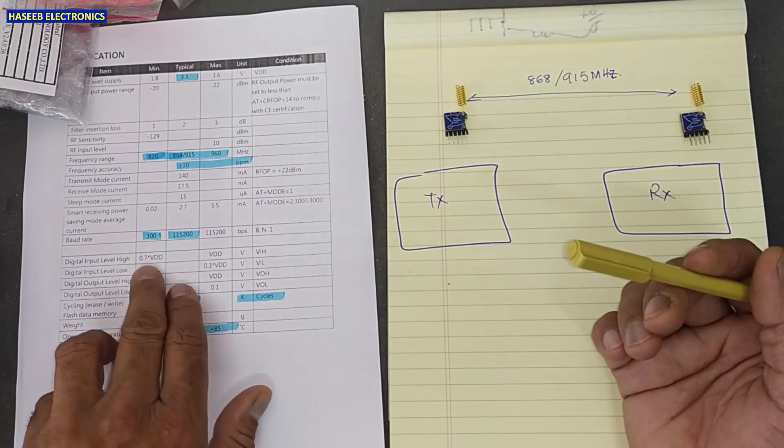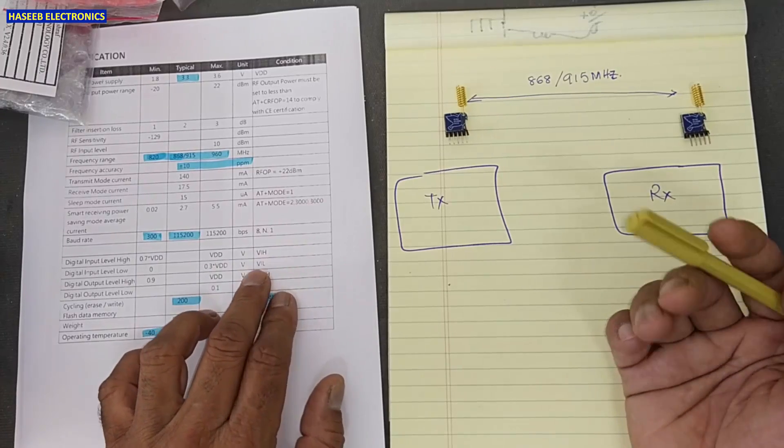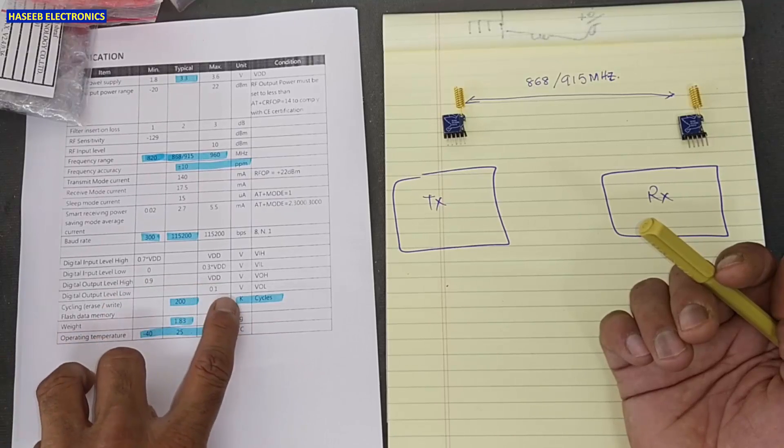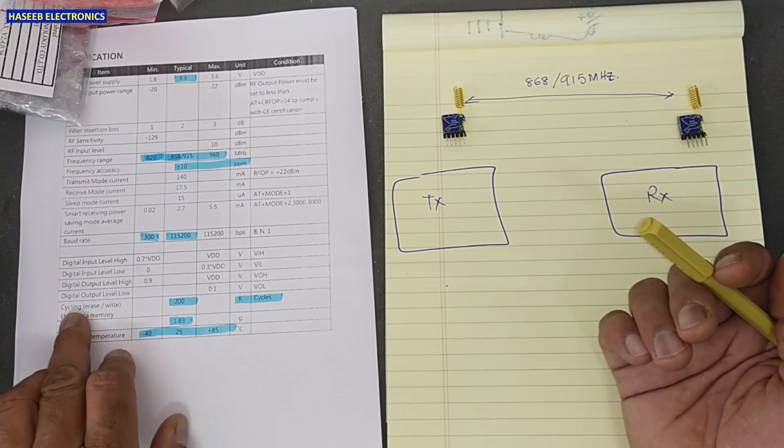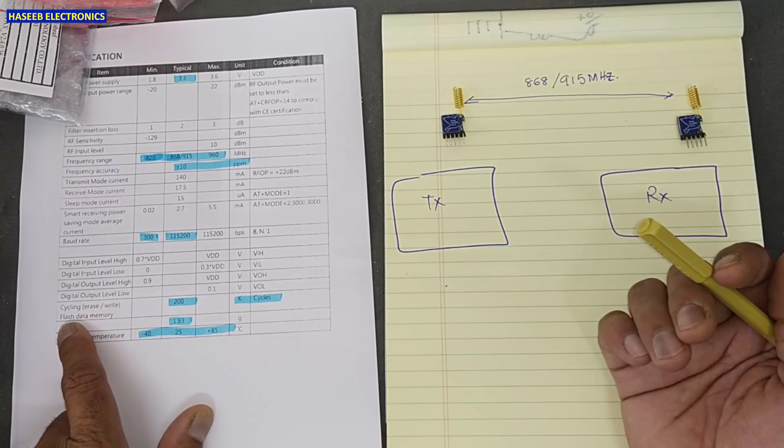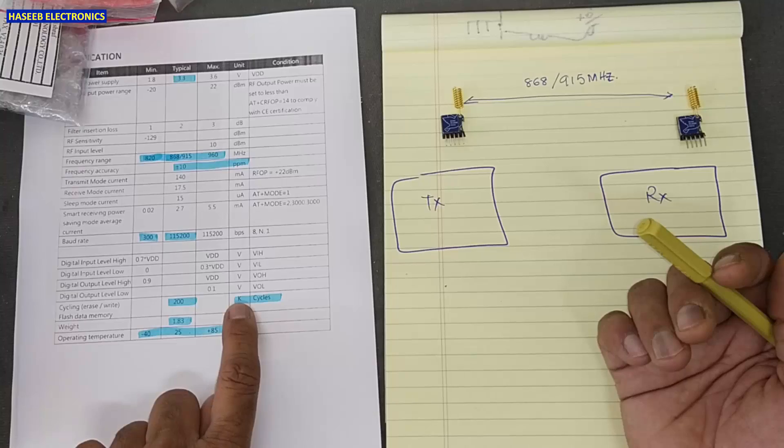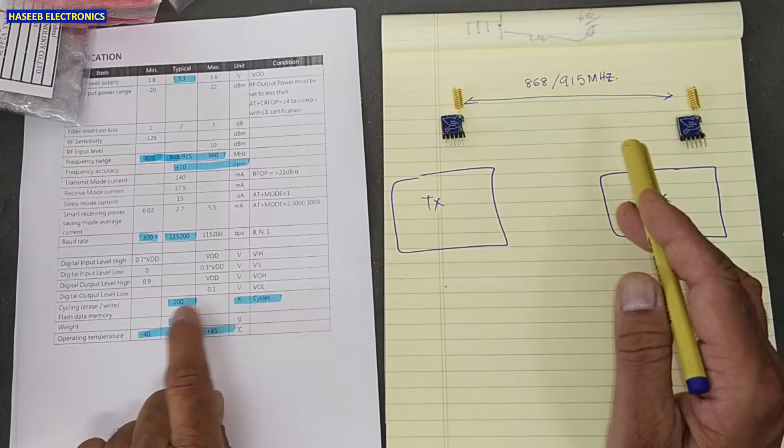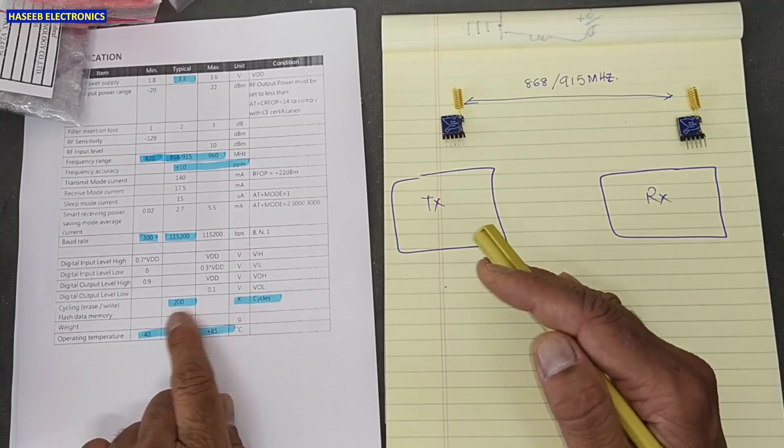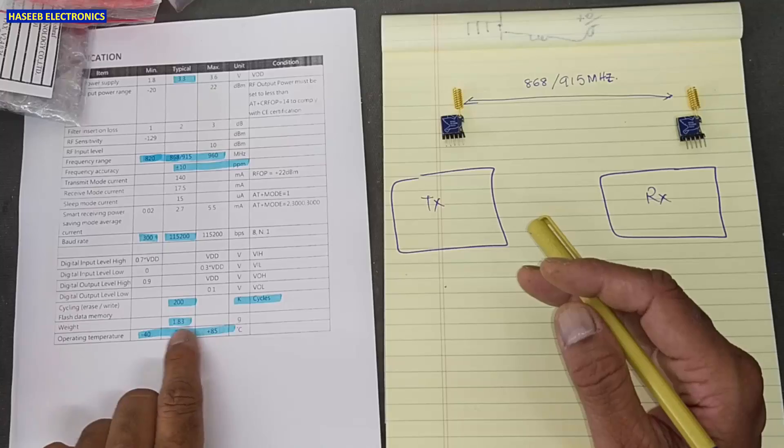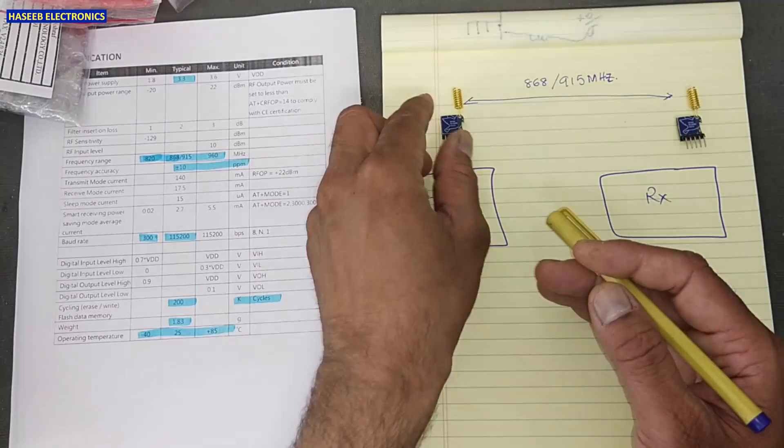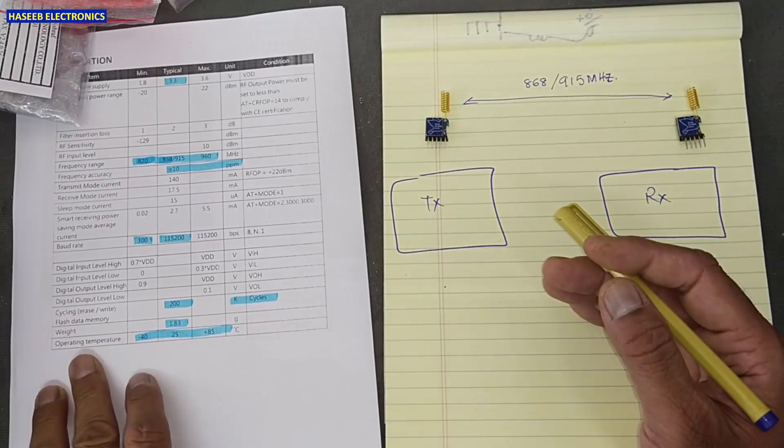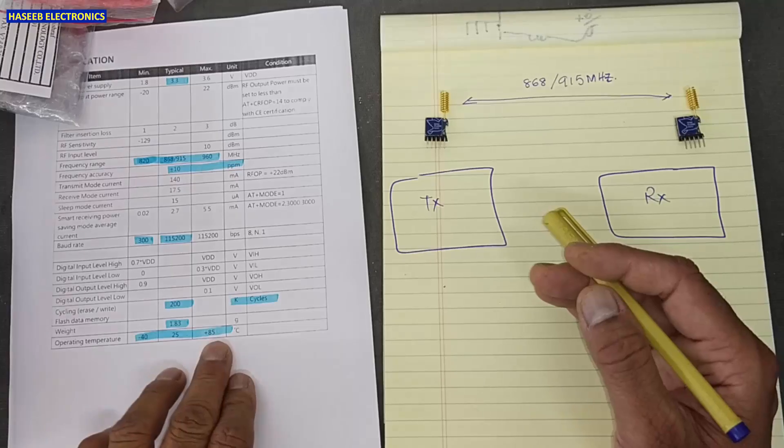So here are the input levels: VIH input high level and low level. And VOL, VOH, these are the output levels. And these are the memory cycling rate, flash data memory 200 kilo cycles. So we can write, rewrite data, we can erase memory up to this level, that is 200,000 cycles. And weight is just only 1.83 gram, very lightweight. And operating temperature range, minus 42 plus 85 degree.